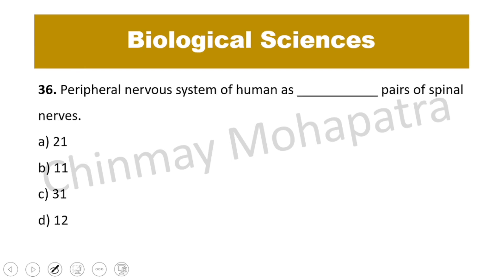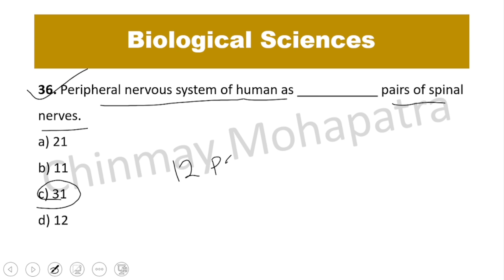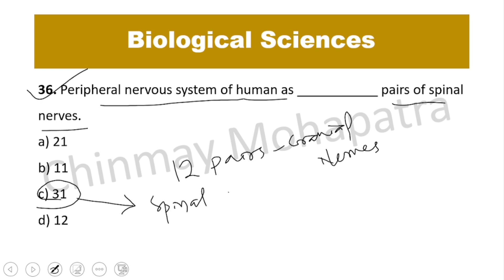Question number 36: The peripheral nervous system of humans has how many pairs of spinal nerves? The right answer is 31 pairs. We also have 12 pairs of cranial nerves and 31 pairs of spinal nerves — both important from an exam point of view.